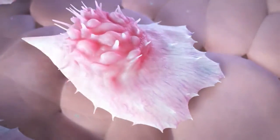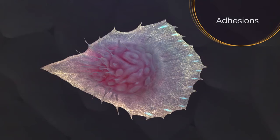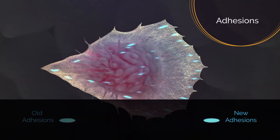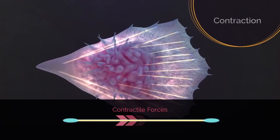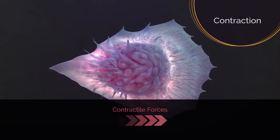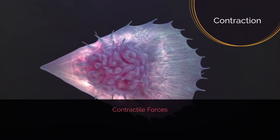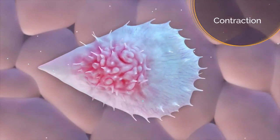As the cell moves forward, adhesions occur along the leading edge of the cell as actin bundles anchor to the surface via adhesion molecules. These newly formed adhesions are connected to old adhesions via contractile stress fibers consisting of myosin filaments and antiparallel actin bundles. The cell is pulled forward mainly by contractile forces generated by myosin acting on the actin filaments. As the contractile fibers contract, the rear of the cell comes forward.